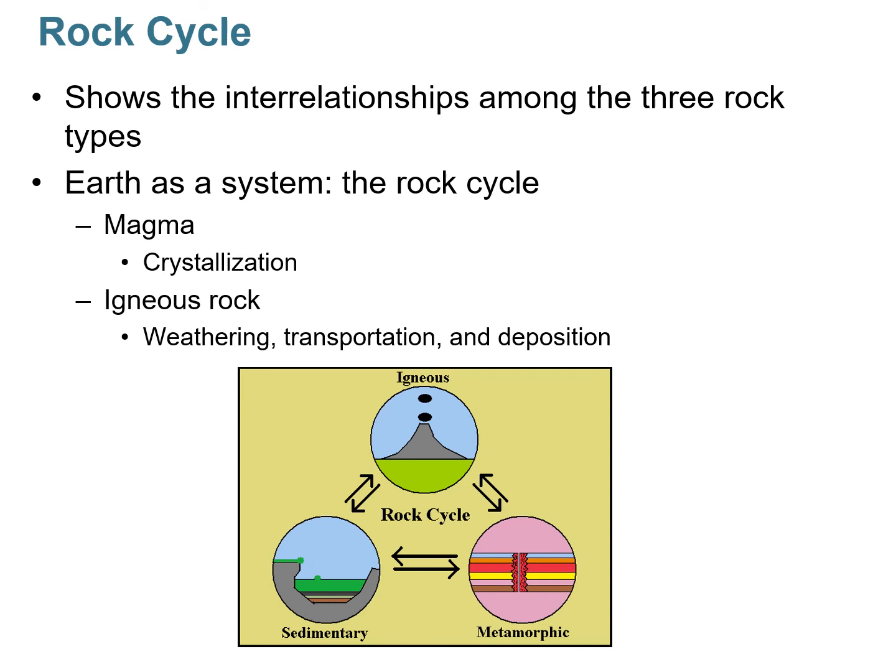When we talk about rocks, we have to talk about the rock cycle. This shows the relationship among the three different rock types — igneous, metamorphic, and sedimentary — and it treats Earth as a system. There's a rock cycle.